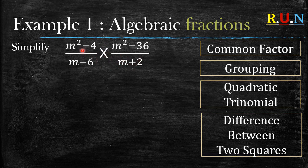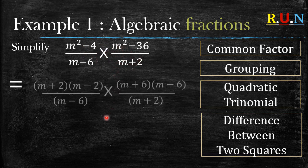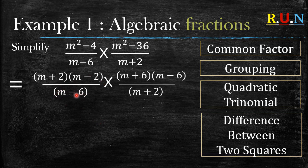What we do next is we factorize out anything that can be factorized. In this sum, the two numerators can be factorized. With the denominators, I just put them in brackets because they are two terms. With the numerators, I've factorized using difference of two squares — once you factorize the first numerator it gives you this answer, and once you factorize the second numerator it gives you this answer.